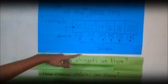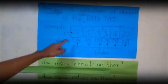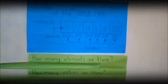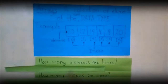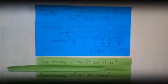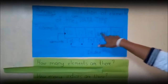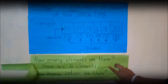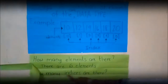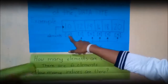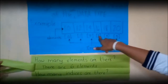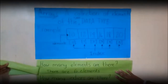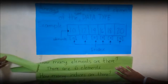There are 2 questions. Can you answer it, Noelle? Can you tell me how many elements are there? Let's count: 1, 2, 3, 4, 5, 6. There are 6 elements. And can you tell me how many indices are there? Let's count: 0, 1, 2, 3, 4, 5. There are 5 indices in the array. Remember, indices are always less than the number of elements.